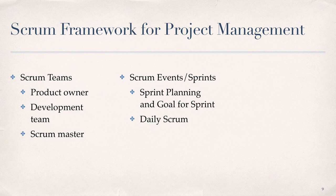The daily Scrum is a 15-minute time-boxed event for the development team, held every day of the sprint to review progress toward the sprint goal and confirm that progress is trending toward completing the work in the sprint backlog. As we do not meet every day for this class, the daily Scrum will be conducted asynchronously, facilitated by a discussion forum or other method agreed to by the team.